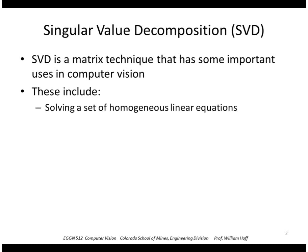These include solving a set of homogeneous linear equations, namely if we can form our equations in the form Ax = 0 where x is our vector of unknowns and A is a matrix of knowns. This is called a set of homogeneous linear equations.